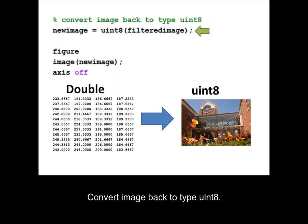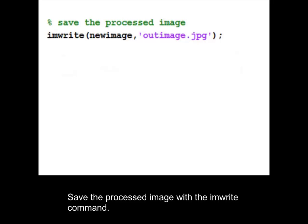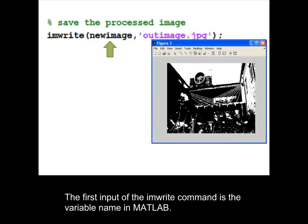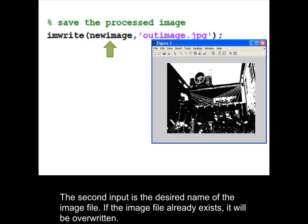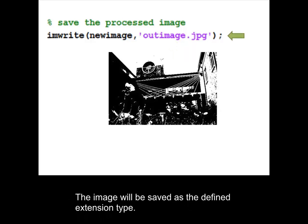Set all layers in the new image to be the same black and white intensity as in the first layer. Convert the image back to type Uint8. Plot the new image. Save the processed image with the imWrite command. The first input of the imWrite command is the variable name in MATLAB. The second input is the desired name of the image file. If the image file already exists, it will be overwritten. The image will be saved as the defined extension type.